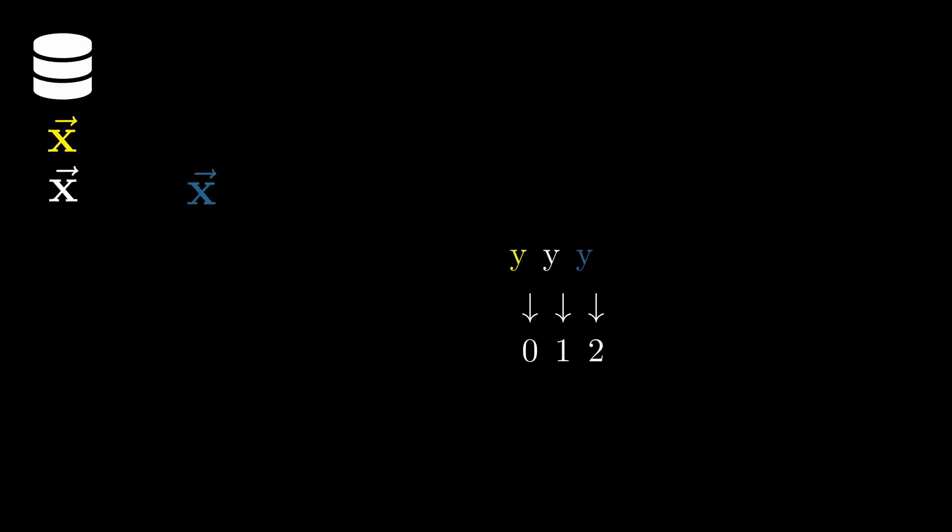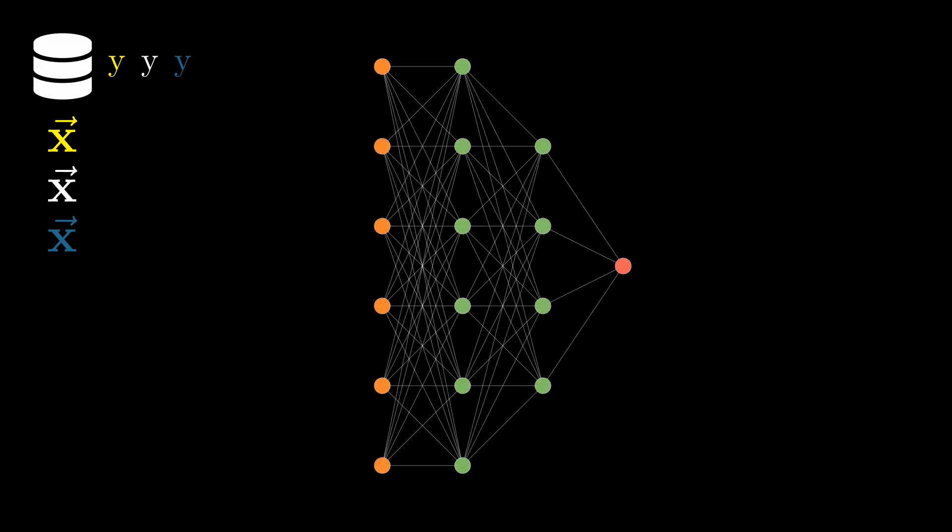And what we want is to have a model that could help us predict the label given the x-vector as the input. And one potential model that could be created is using a neural network. Our x-vectors are six dimensional, that is why there are six neurons in the input layer.